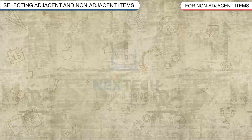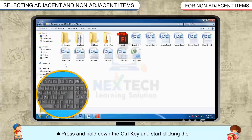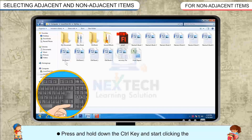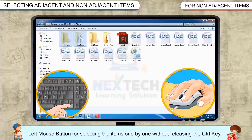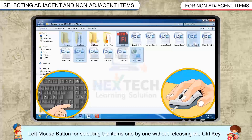Using mouse, press and hold down the Control key and start clicking the left mouse button for selecting the items one by one without releasing the Control key.